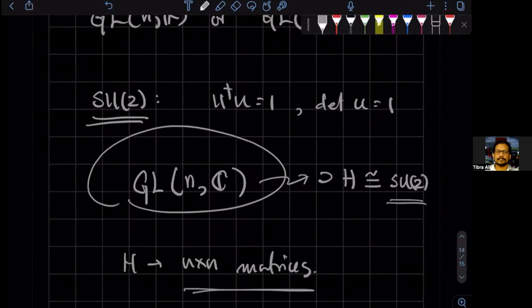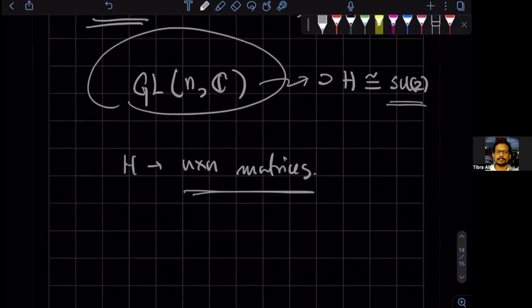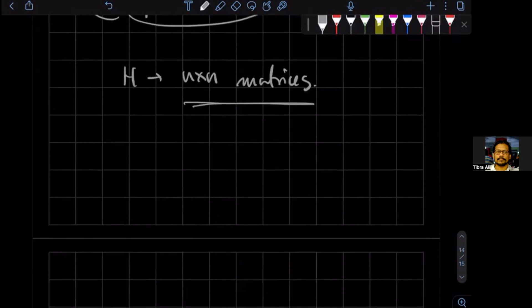Can we call this embedding in the GL group of n dimension? Yeah, it's an embedding. Okay. All right, so let's go and define what is a representation of the group.